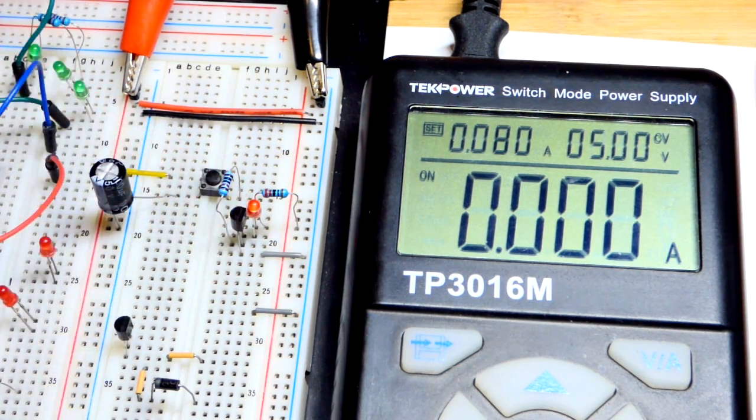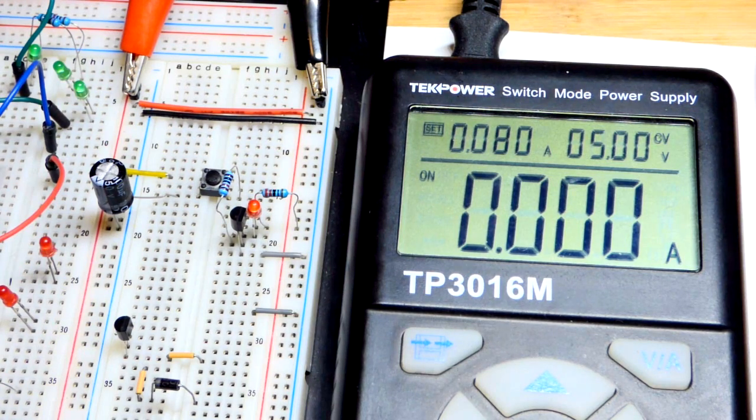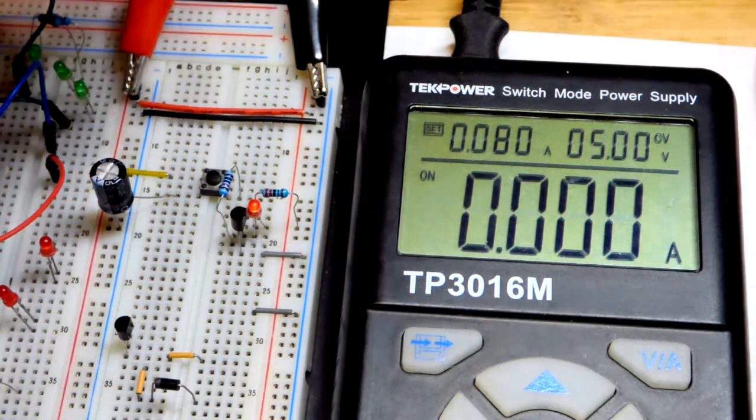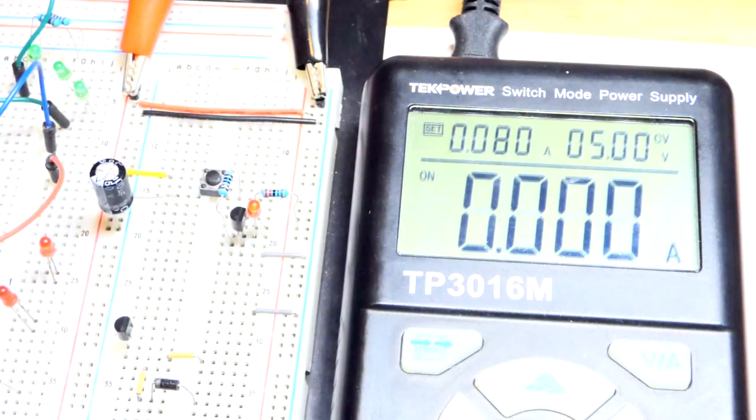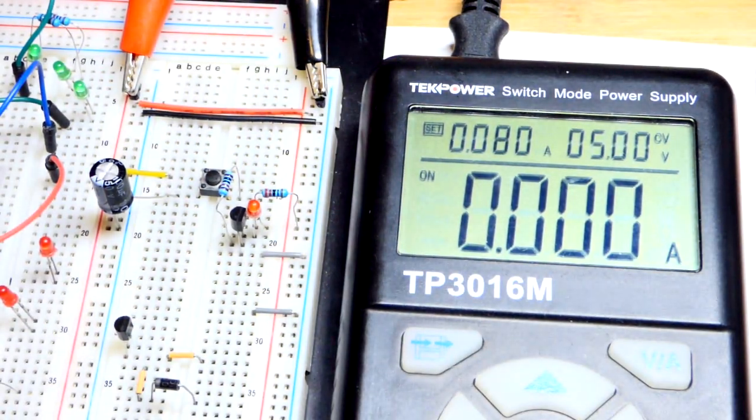And there's still a little bit of a glow. So it's kind of in the active region. But for the most part, it's off. So once that LED goes off completely, it will be in the cutoff region where it's not conducting at all.